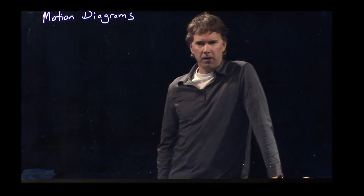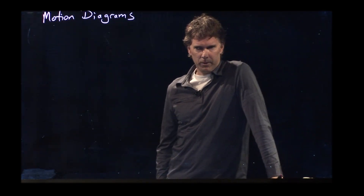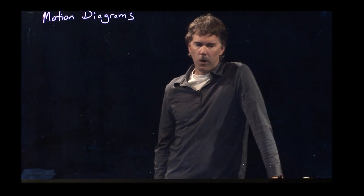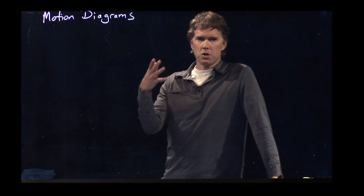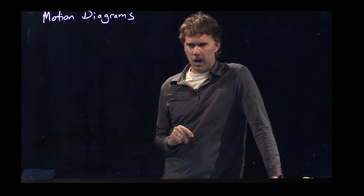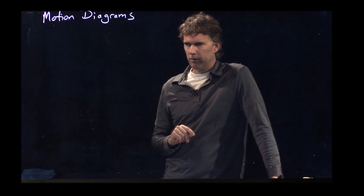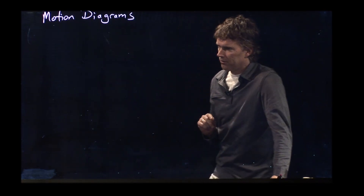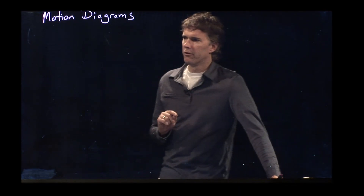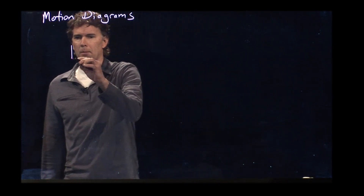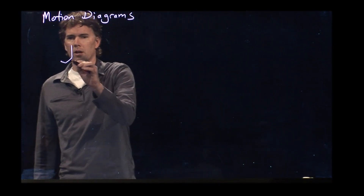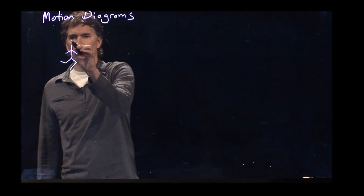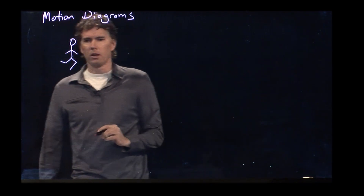Hello class, Professor Anderson here. Let's talk a little bit about motion diagrams. This is a way to sort of visualize the movement of objects in the universe. Let's just think about a person running for a second. If I took a stroboscopic picture of a person running, what would it look like?